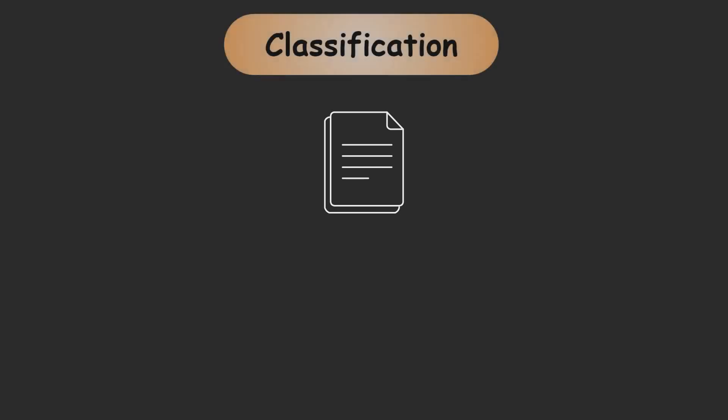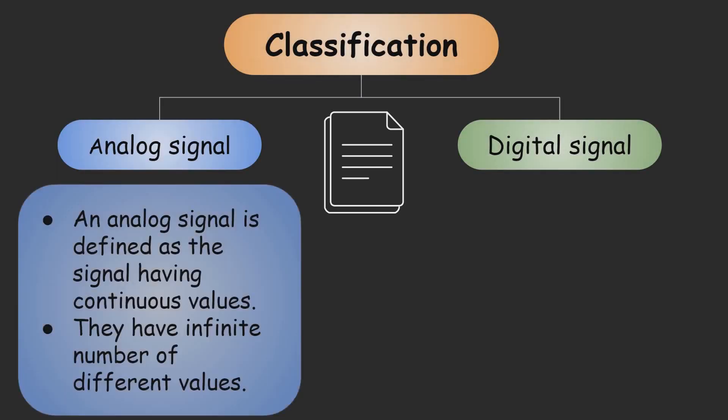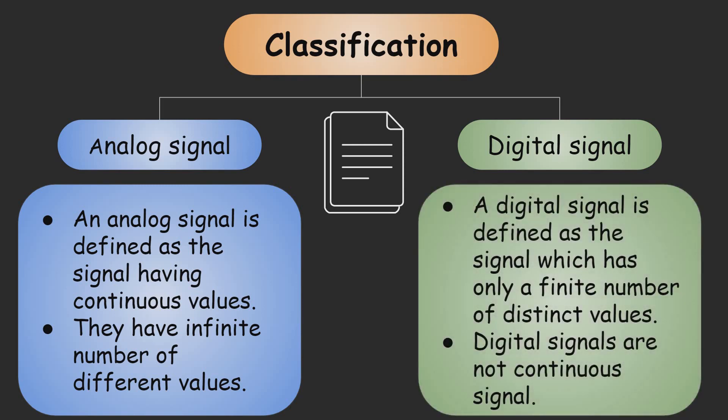The signal is classified into two types, that is analog signal and digital signal. The analog signal is defined as a signal having continuous values. They have infinite number of different values. We can say it has infinite amount of data.